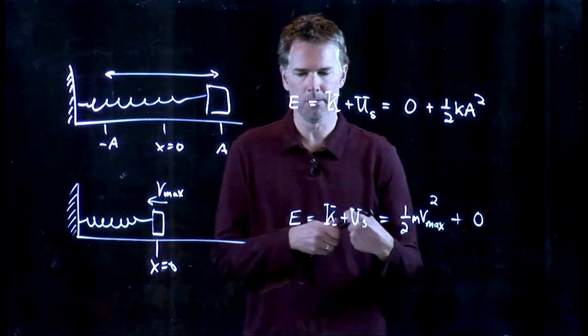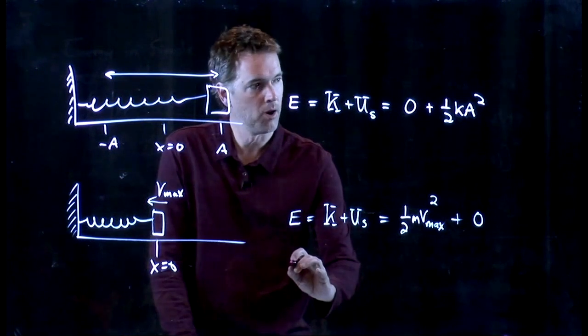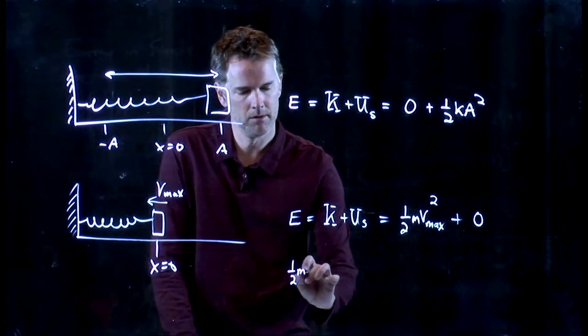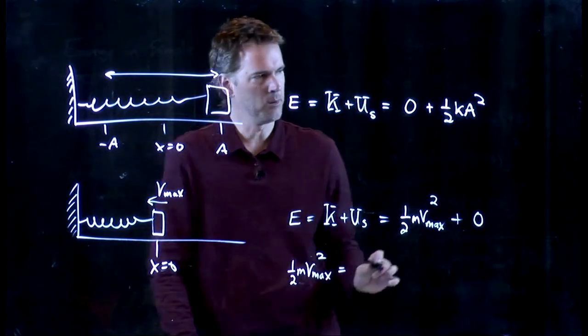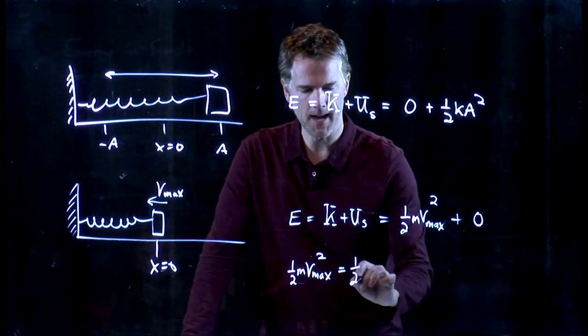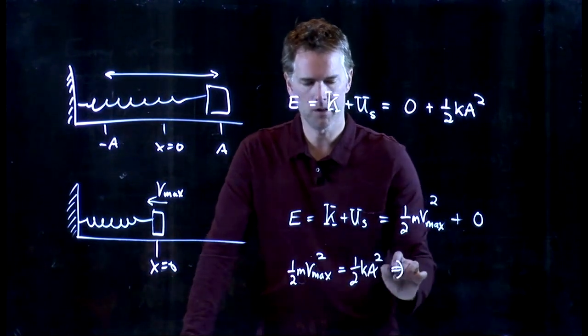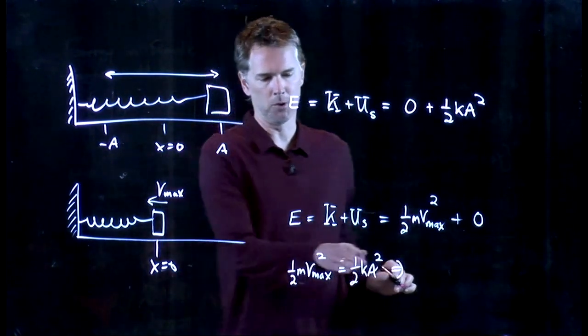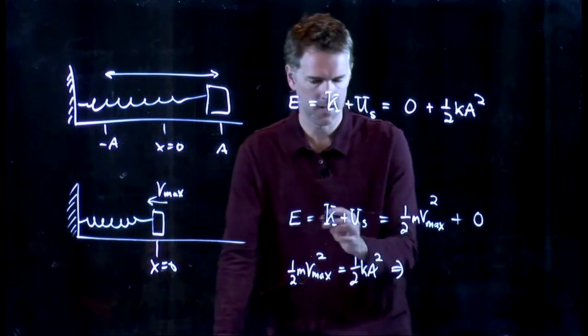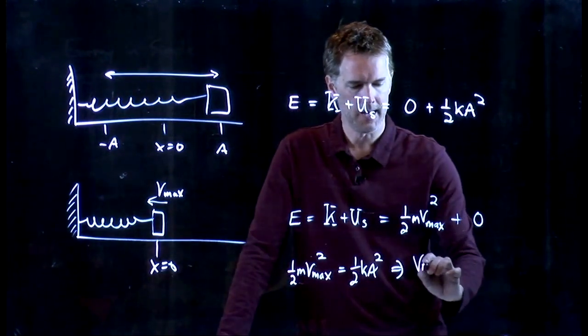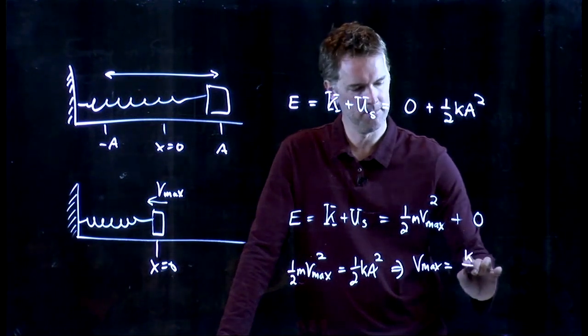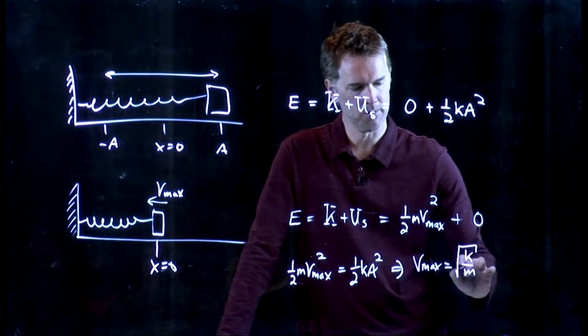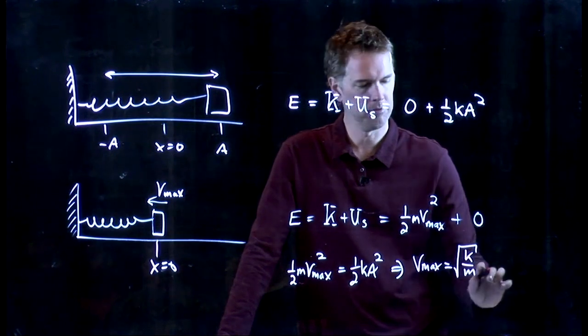And now we can set them equal. So one-half m Vmax squared is equal to one-half ka squared. And you can quickly solve this for V. I multiply both sides by 2, I divide by m, and I get Vmax is equal to k over m square root times a.